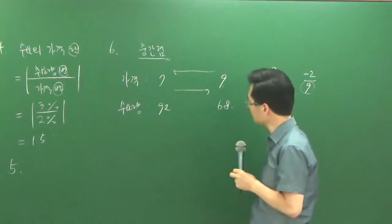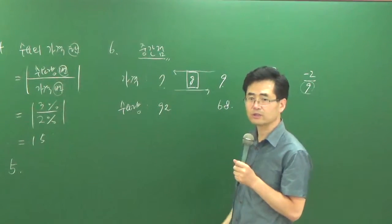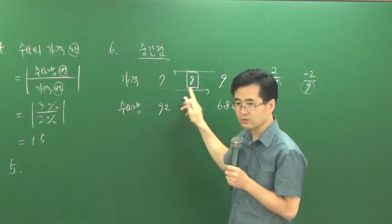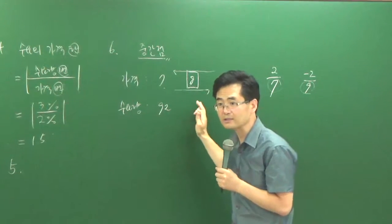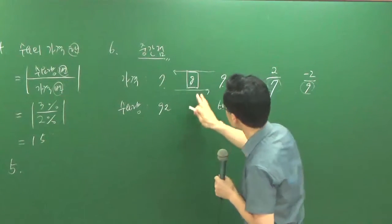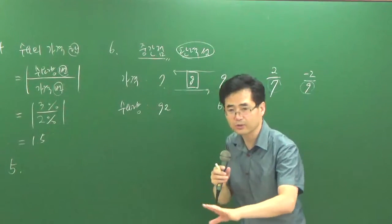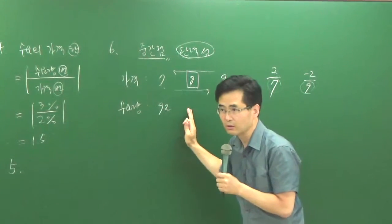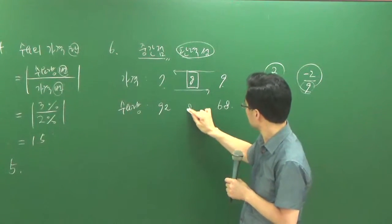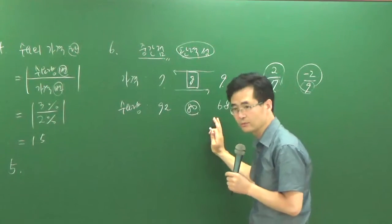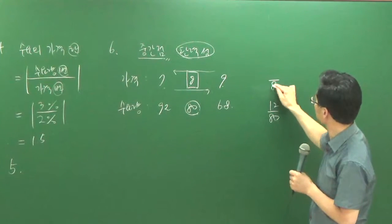중간점을 이용하면 어려움이 없어요. 왜냐하면 이게 8이잖아요. 8에서는 이쪽이든 이쪽이든 1만큼 변하잖아요. 그러니까 신경 안 써도 되는 거죠. 중간점을 사용하는 거예요. 중간점만 찾으면 되는 거예요. 사실은 이 중간점을 이용한 탄력성은 중간점을 빨리 찾으라고요. 우리 기본서의 공식 같은 건 필요 없어요. 중간점 찾는 거는 평균하면 되잖아요. 중간점 여기 80이죠. 80분의 12 하면 되는 거고 여기 위에서는 8분의 1 하면 된다는 거죠.